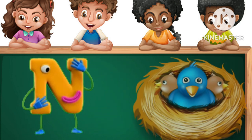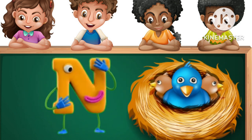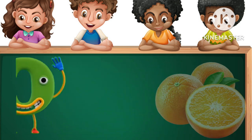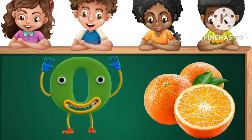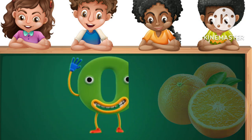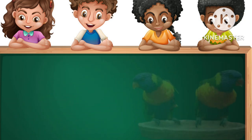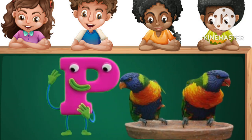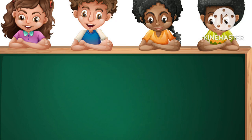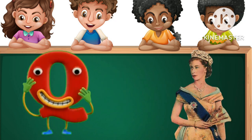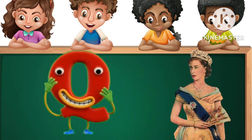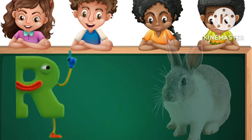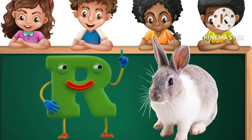M for Mango. N for Nest. O for Orange. P for Parrot. Q for Brain. R for Red.